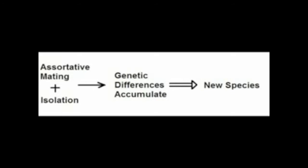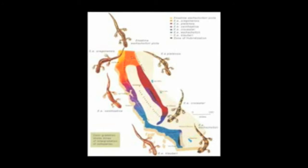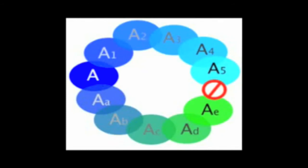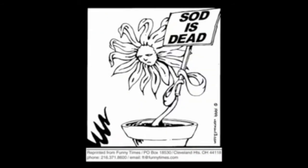One example demonstrating this is a phenomenon known as ring species, whereby you can have, let's say, eight different populations of a single species. This happens a lot in birds and parrots — there's one species in Africa, a type of parrot, where this is commonly seen. Each population will be able to mate with the populations directly adjacent to it, and this continues all the way around. But the populations at either end or across from each other are unable to mate. Most biologists would agree that this is a species in the process of speciating and branching off.